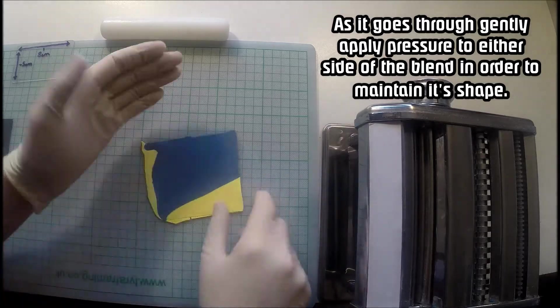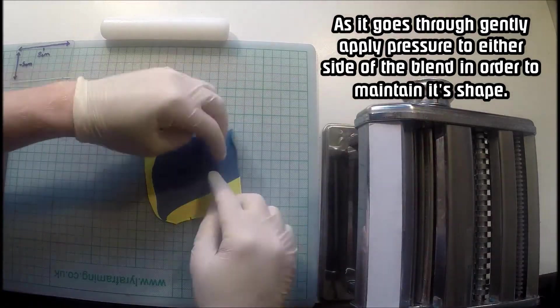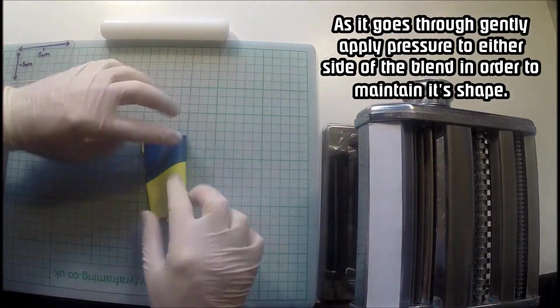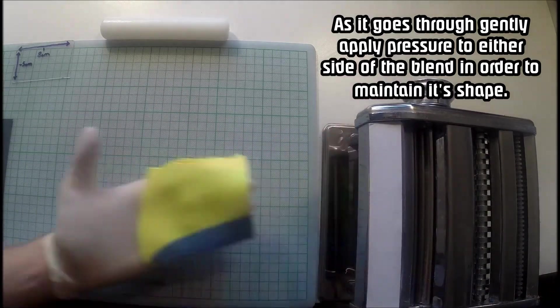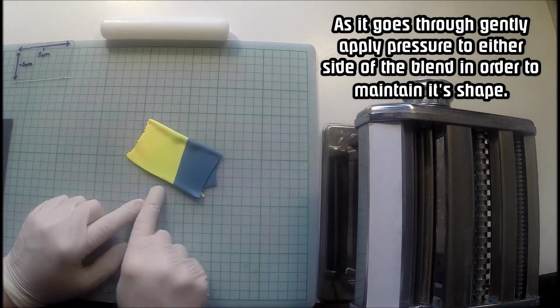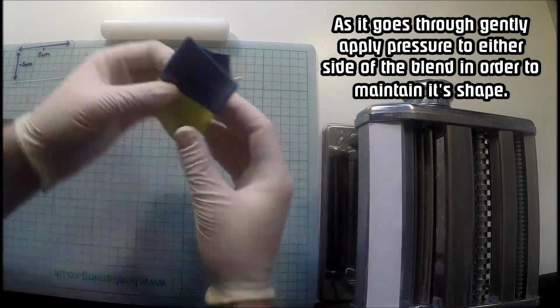If you don't squeeze, if you just put your Skinner Blend through any old way, it will eventually just get longer and longer and become completely unmanageable. So I just pinch the edges in order to control it as it goes through and I do that every single time I put it through the pasta machine.